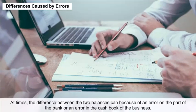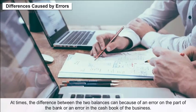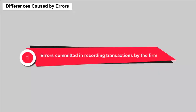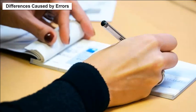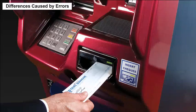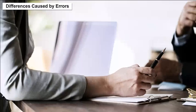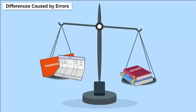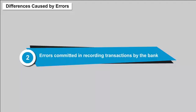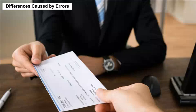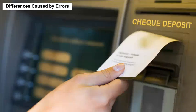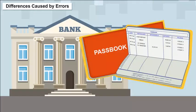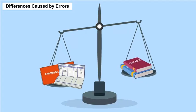Differences caused by errors: At times, differences between the two balances are caused by errors on the part of the bank or errors in the cash book of the business. Any omission or wrong recording of transactions related to checks issued, checks deposited, or incorrect totalling committed by the firm in the cash book will create an imbalance between the pass book and the firm's cash book. Similarly, any such errors committed by the bank in the pass book will also create an imbalance between the two records.